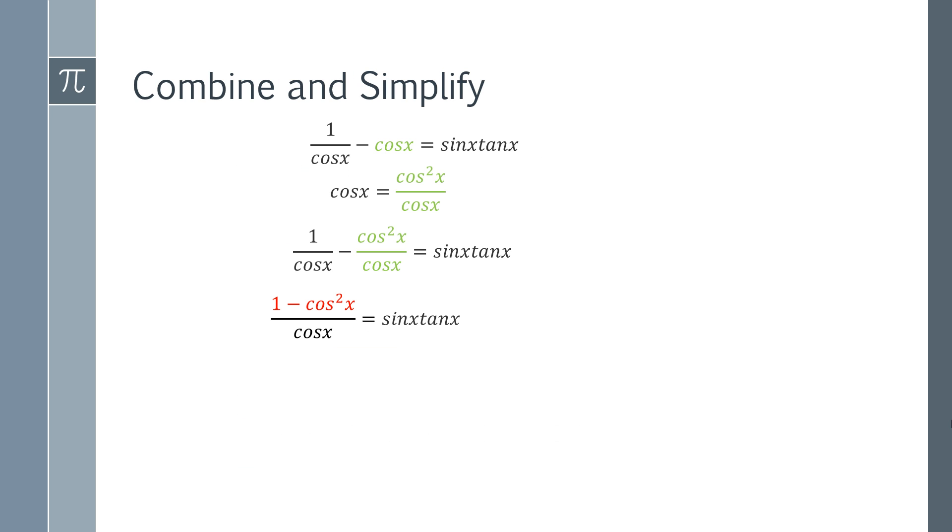And you might remember that cos squared x plus sine squared x equals 1. And if you rearrange that, you can show that sine squared x is 1 minus cos squared x. So that 1 minus cos squared x can simply be replaced with sine squared x.